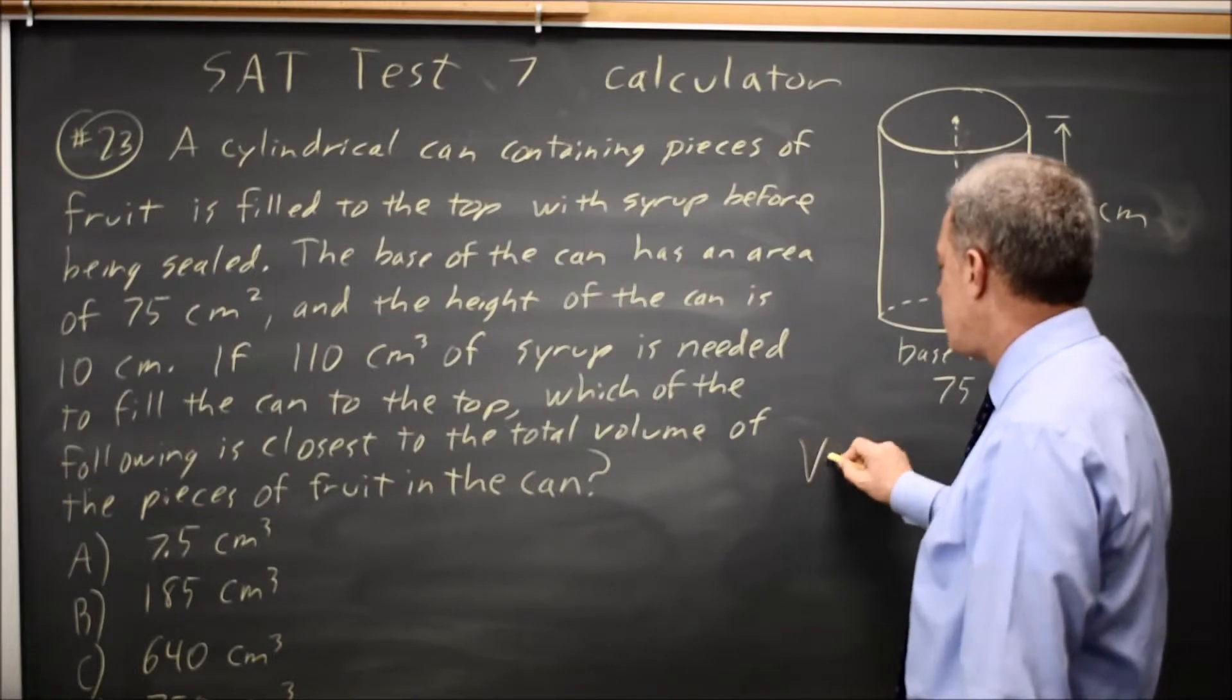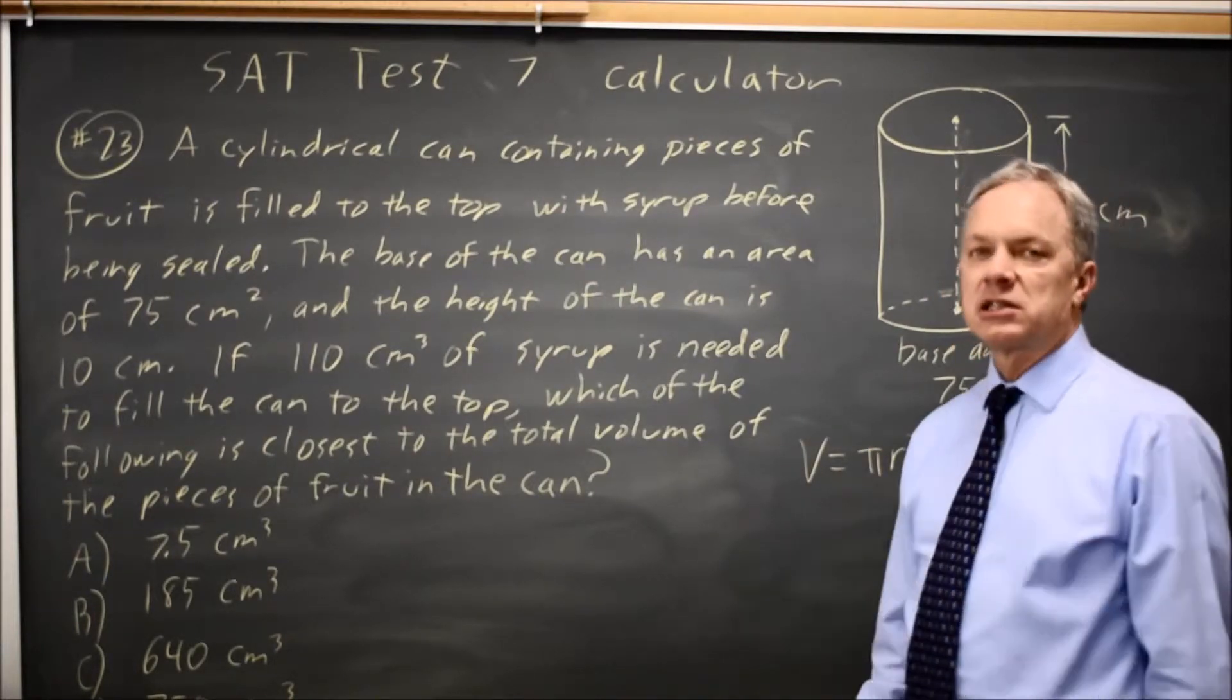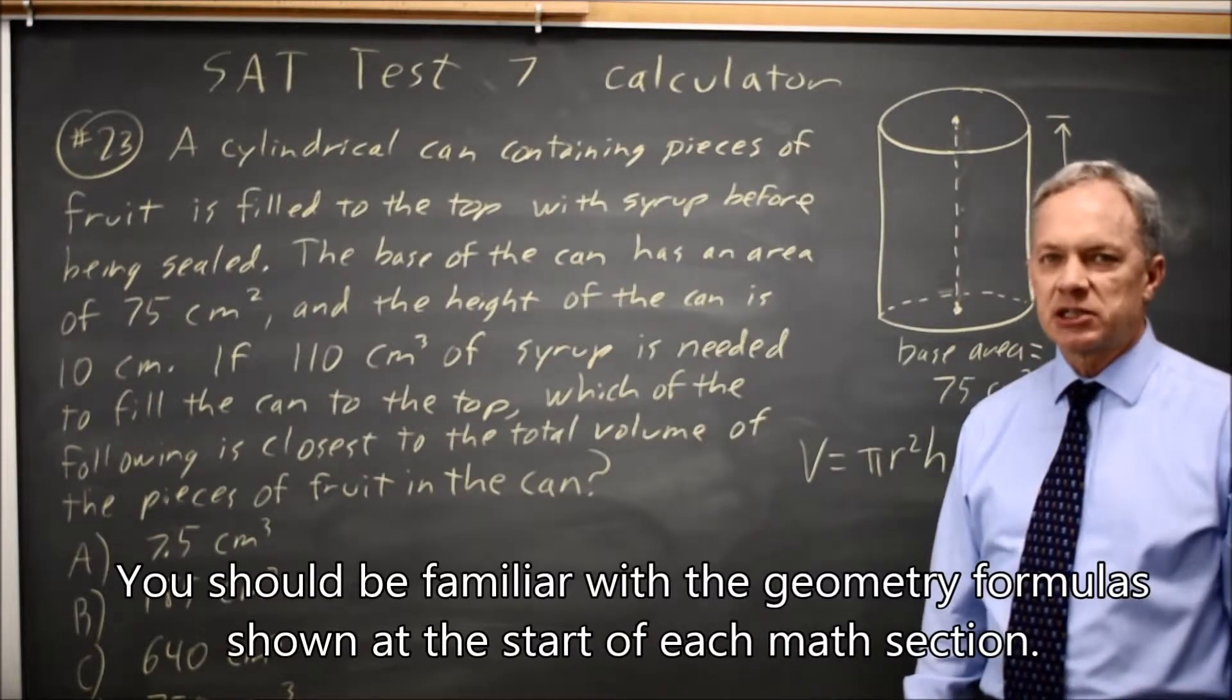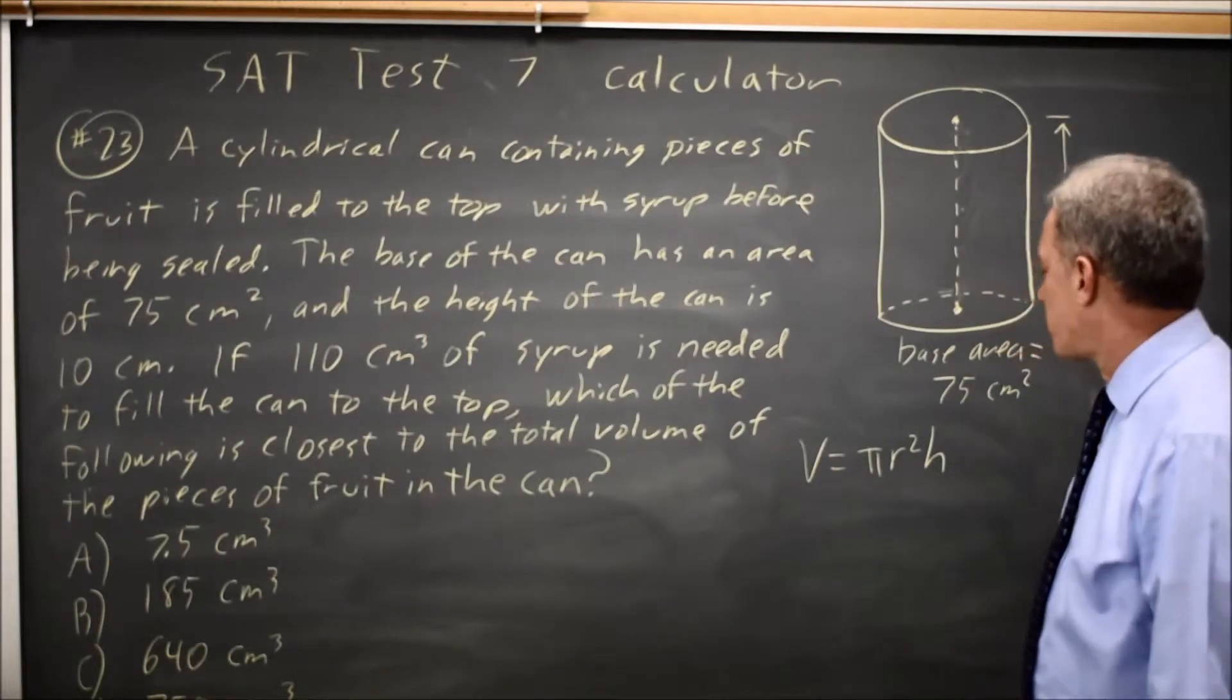We're given the formula for the volume of a cylinder is pi r squared h, and that's at the start of each math section, although you should learn this formula for the SAT if you don't remember it off the top of your head.